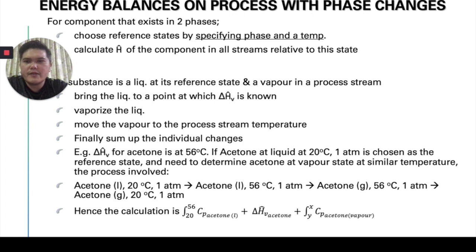So, for example, like if let's say for a substance, which is a liquid at its reference state and a vapor in a process stream. We have to bring the liquid to the point at which we know the ΔH of vaporization and we vaporize the liquid and then we move the vapor to the process stream temperature. And then, only then we'll be able to finally sum up the individual changes.